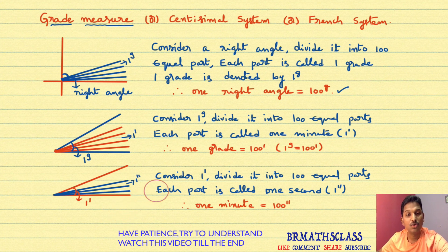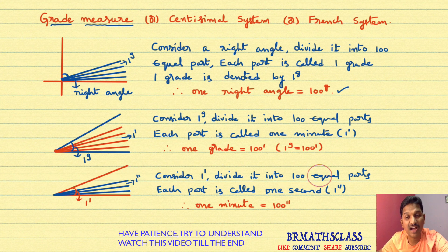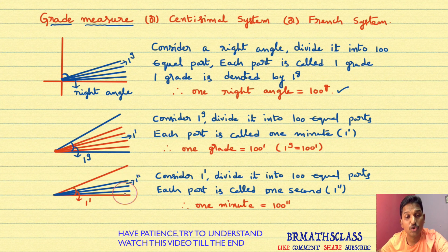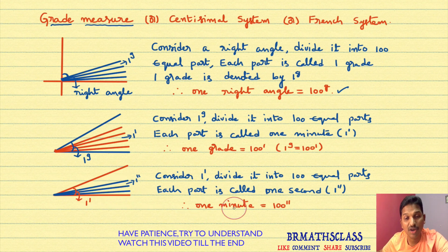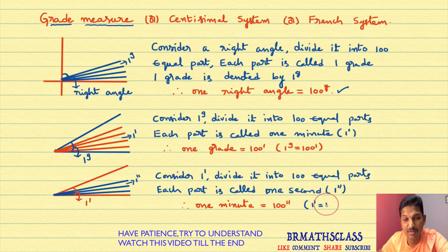So here, how many parts are there? 100 parts. So one second, two seconds, three seconds, four seconds, five seconds — how many seconds will we get in total? We will get 100 seconds in one minute. That means one minute equals 100 seconds.